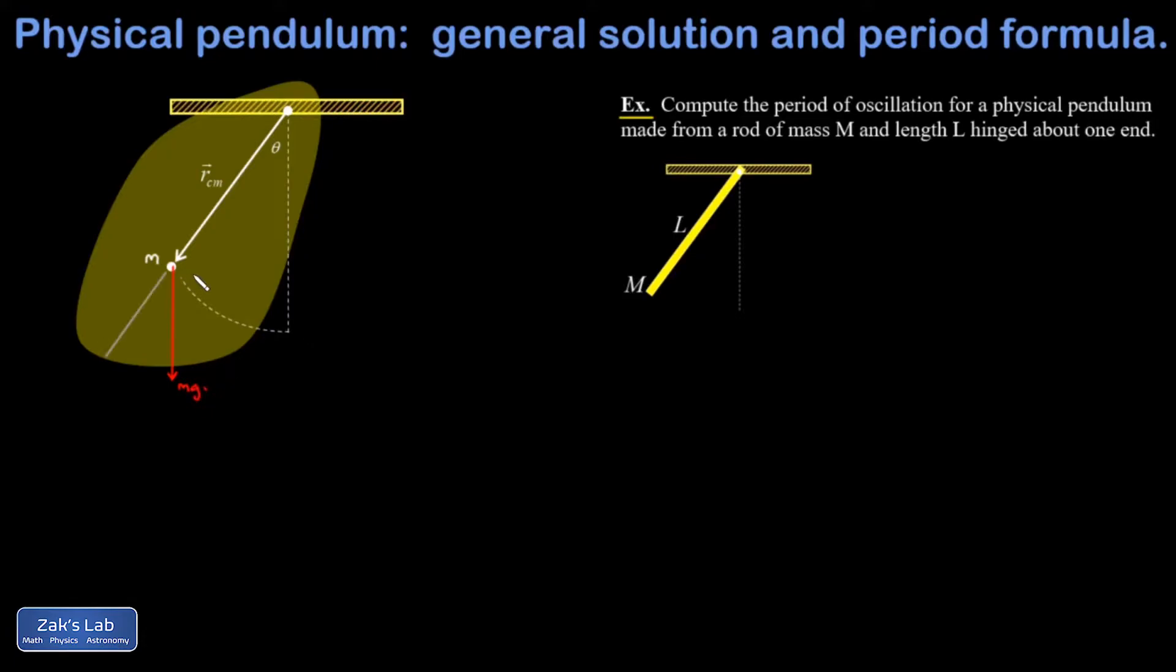Now I want to decompose that into radial and tangential components. And I noticed that this angle is theta as well. So the radial component of the weight will be mg cosine theta.